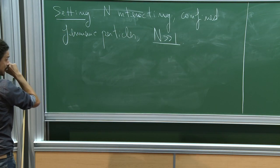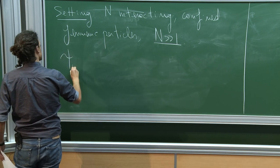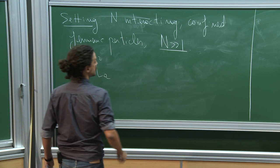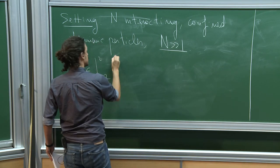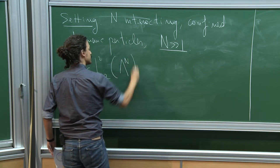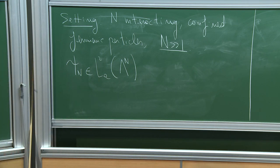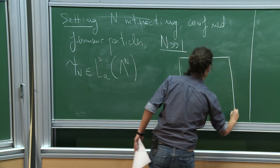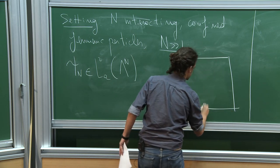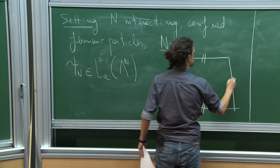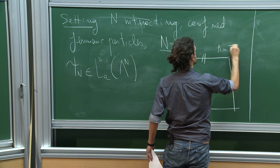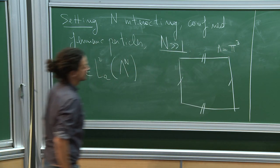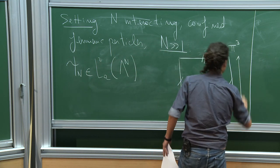We're talking about a quantum system, so the state is specified by the wave function. This is going to be an antisymmetric wave function for a system confined in a box lambda, which I take with periodic boundary conditions. My lambda is a three-dimensional torus with side length 2π.